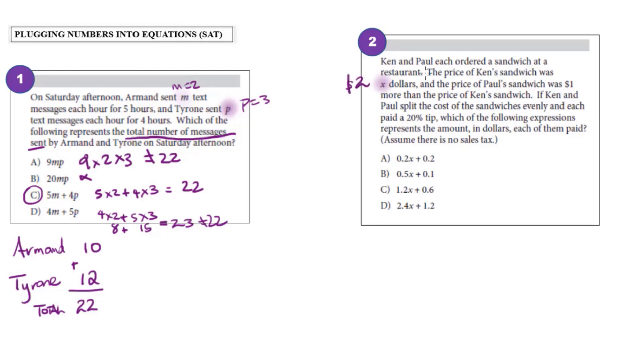So if the price of Ken's sandwich was X dollars, which now is $2, and the price of Paul's sandwich was $1 more than the price of Ken's sandwich. So that means the price of Paul's sandwich was $3.